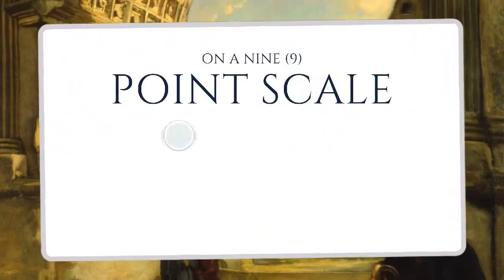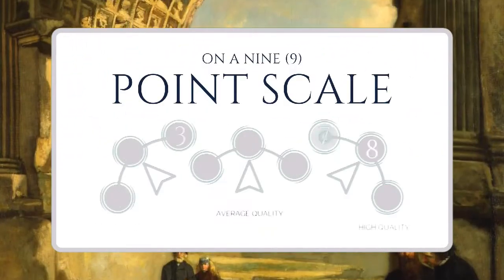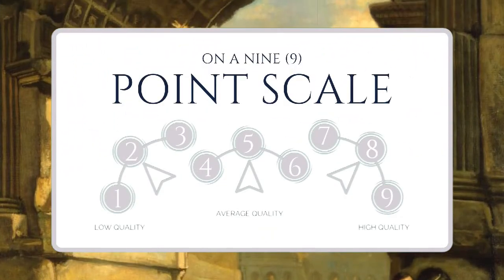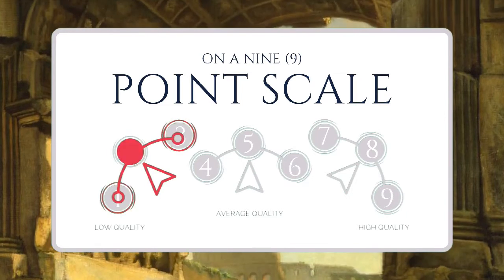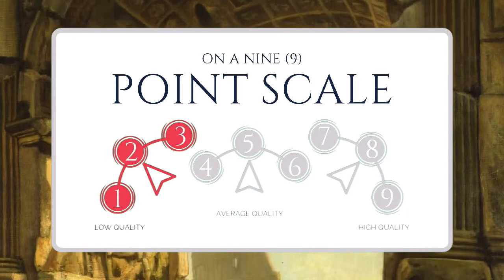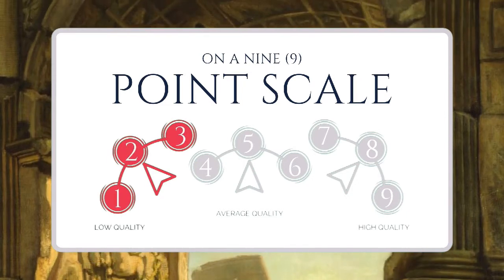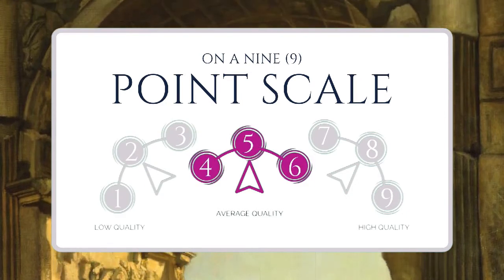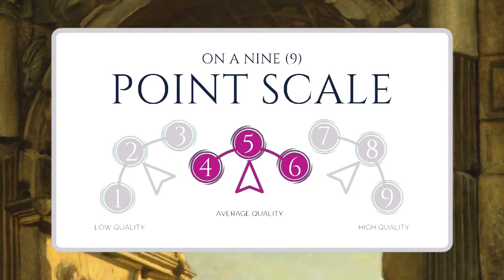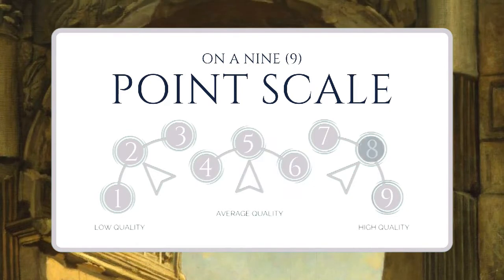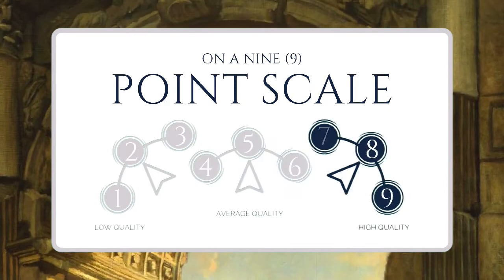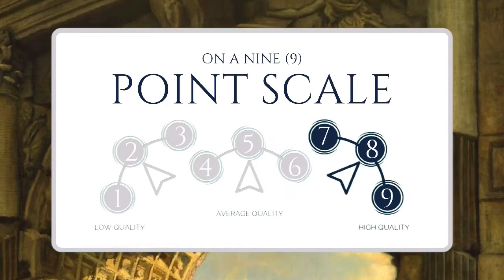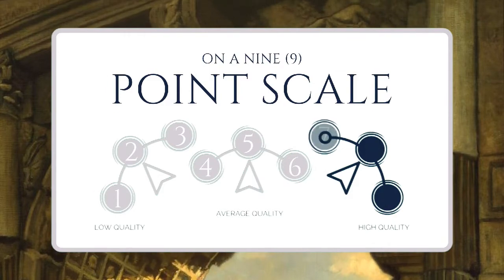Use our 9-point scale to score how clear and smart each quality is used. Reply 1, 2, or 3 for low quality. Use 4, 5, or 6 for okay quality. And 7, 8, or 9 for high quality. So now, let's score this art.